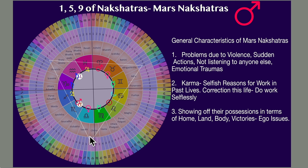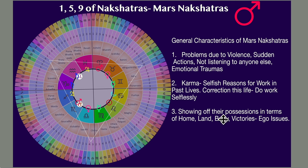Mrigashira, Chitra, and Dhanishtha. The correction in this life: work selflessly, learn to work in teams — that will be their theme. Not to work alone for self-glorification. Number 3: they love to show off their possessions — in terms of home, land, body, and victory. You see all the Mars themes here.